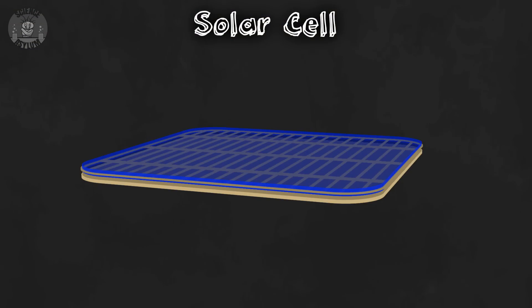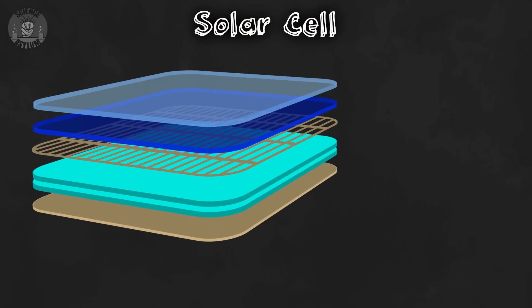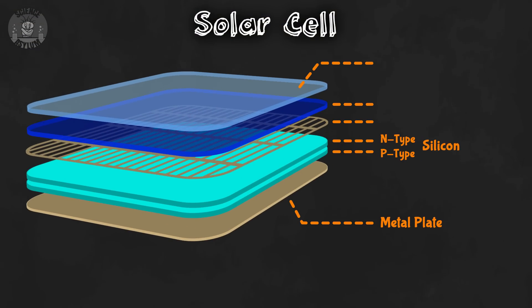They might look like one thing, but there are several layers. A metal plate on the back, two different types of semiconductors, a metal grid on the front, an anti-reflection coating, and a piece of glass. Now, that's a lot of layers, but this is all about turning light energy into electrical energy. So, let's follow the light.